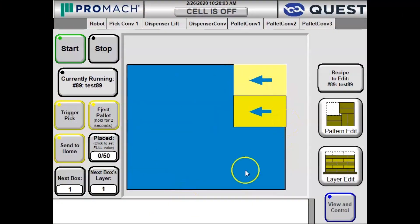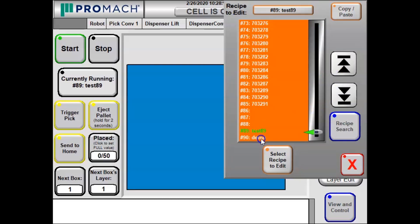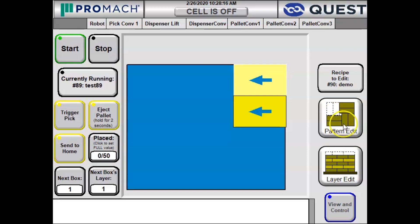To create a brand new palletizer recipe with our Quest Industrial BoxBot software, we first select the recipe we want to modify. The system is capable of continuing to run while we modify a recipe.